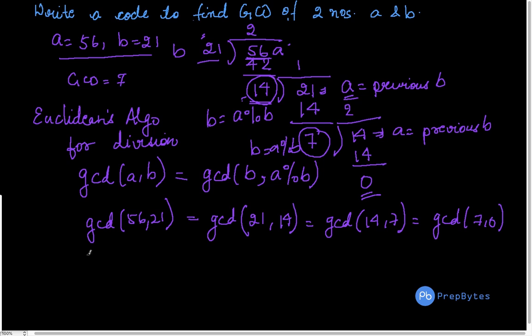And we have seen that GCD of A, 0 is equivalent to A and GCD of 0, B is equivalent to B. So using this particular formula which is same as this, we will calculate our GCD.